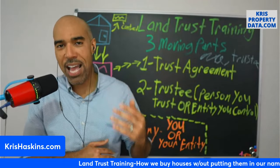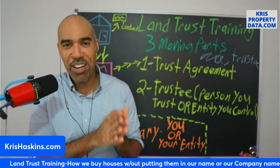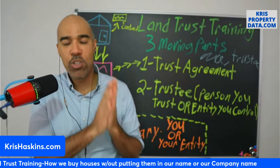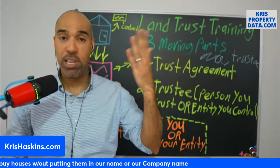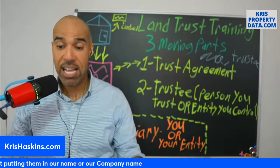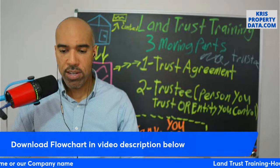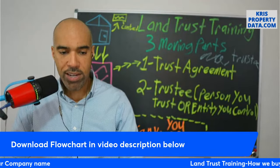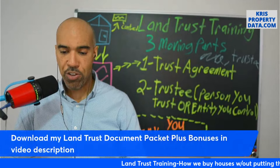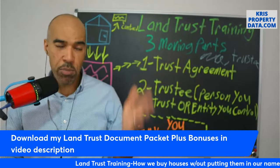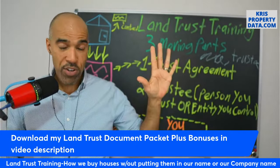It just takes a little time — repetition is king. Repetition is going to help you understand this. It took me three years but I think you can do it faster. If you didn't already, go download your flow chart — it's the first download in the video description — and the land trust document packet, including my subject-to lease option workshop which sells for $500. I'm giving it to you today for $1.